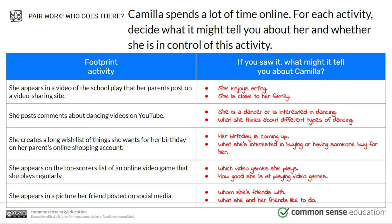She appears on the top scorers list of an online video game she plays regularly. We can learn which video games she plays and how good she is at them. Finally, she appears in a picture her friend posted on social media — we can infer who she's friends with and what she and her friends like to do. So her digital footprint tells us a lot about her and involves things both in and out of her control. Her footprint, like the fossil, can last a very long time. Even if she tries to delete activity, it will be stored somewhere or may have already been downloaded and shared.